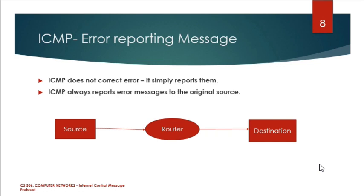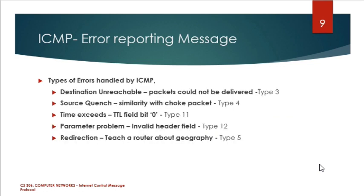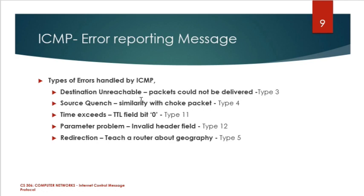The source should be directed and intimated — that is the major advantage of ICMP. The source gets notified. The types of error reporting messages available are classified. The first one is called destination-unreachable type of error reporting message.